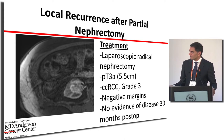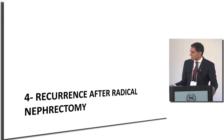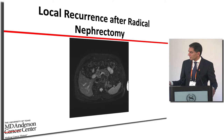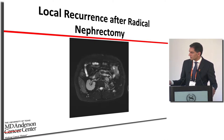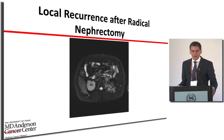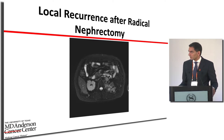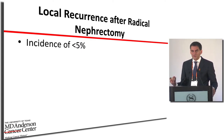Regarding recurrence after radical nephrectomy: a patient who had a hand-assisted laparoscopic nephrectomy at another hospital presented with tumor near the spleen, near the artery, on the posterior musculature — essentially tumors throughout the area where the kidney used to be. Fortunately, this is uncommon.